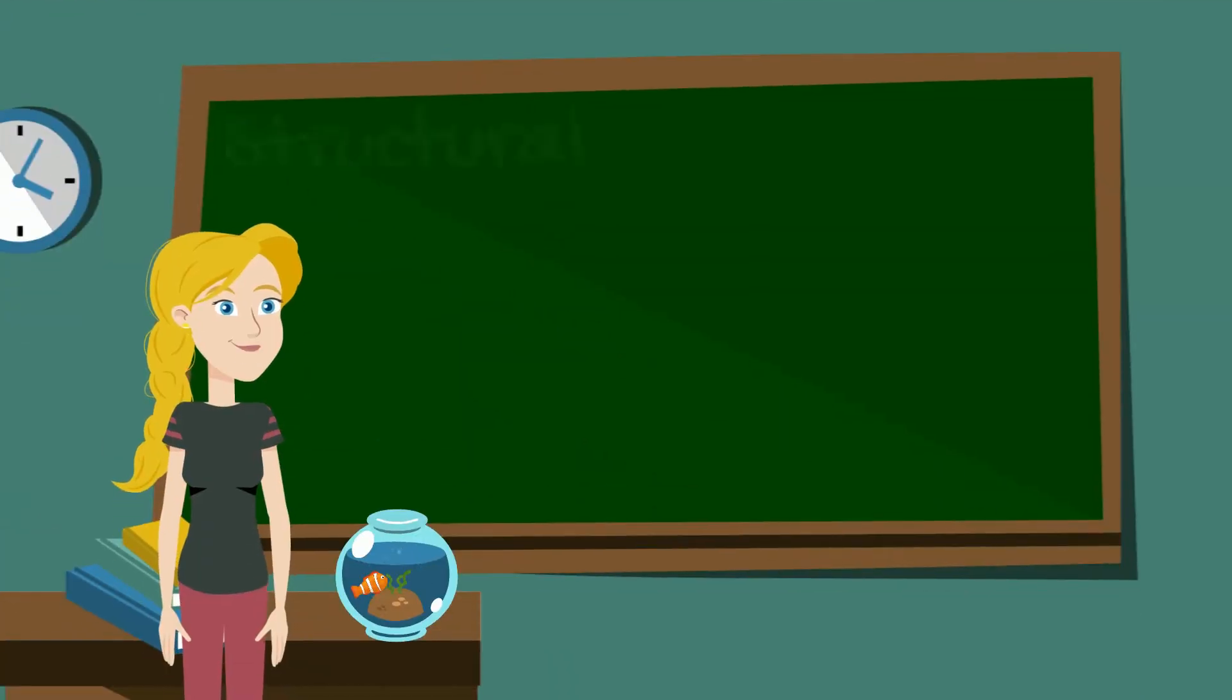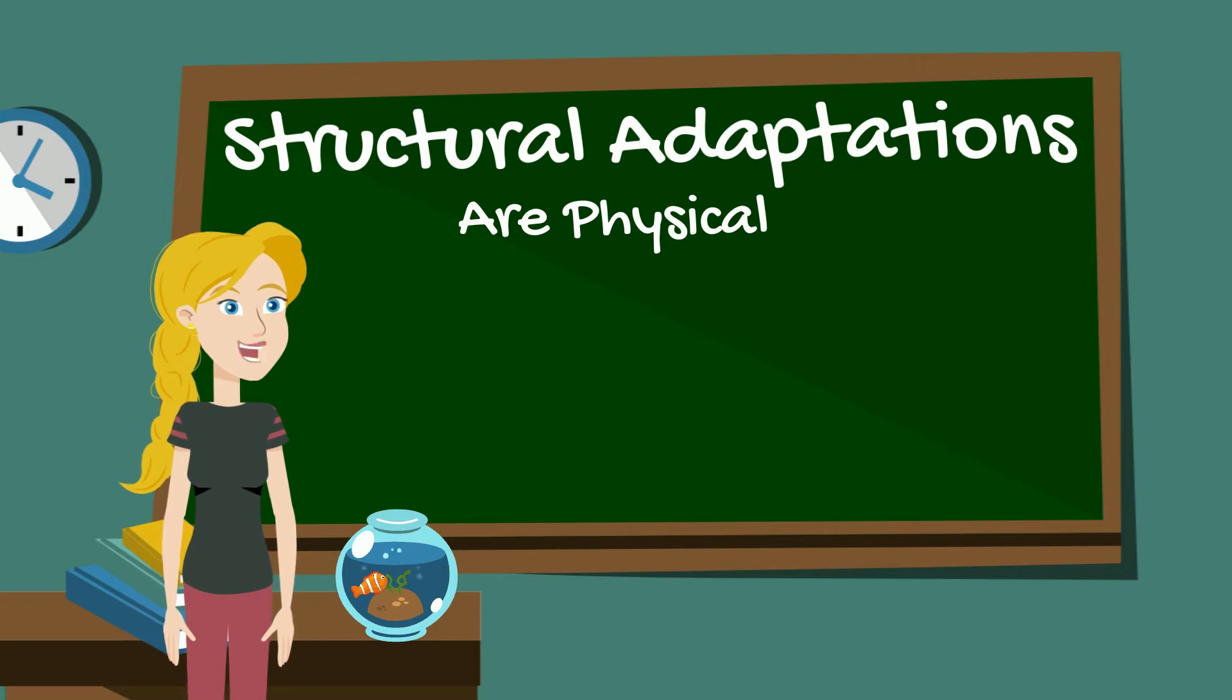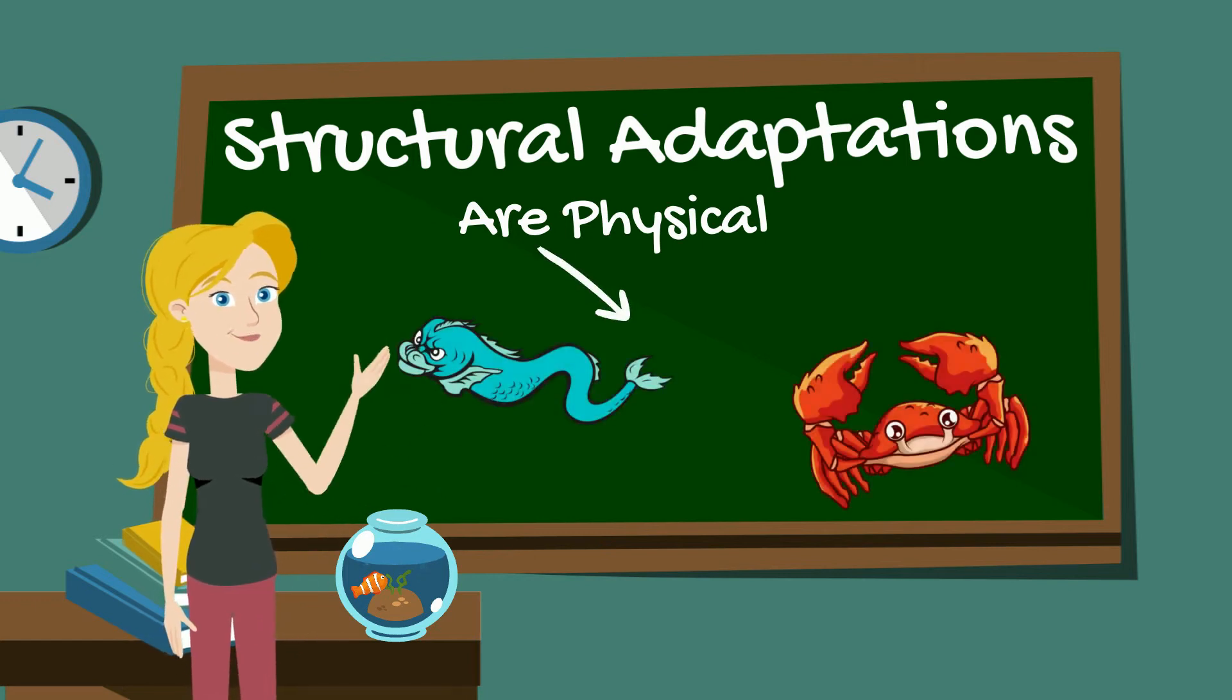A structural adaptation is some type of physical feature of the body, like a tail on the fish or the shell of a crab.